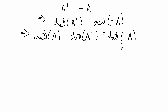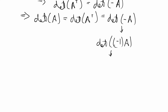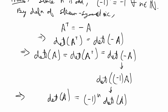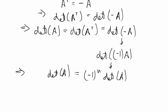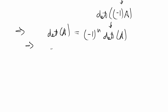We can think of this as the determinant of negative 1 times A, and by the determinant properties that equals negative 1 to the n times the determinant of A, which equals the determinant of A. Since negative 1 to the n equals negative 1 for all odd n, we know that the determinant of A equals negative the determinant of A.